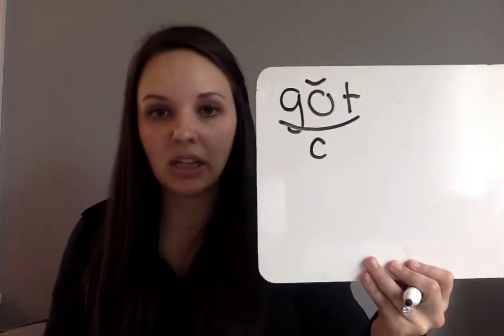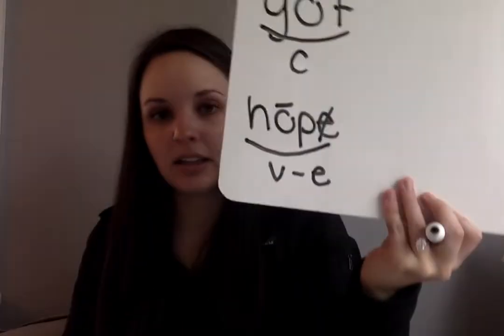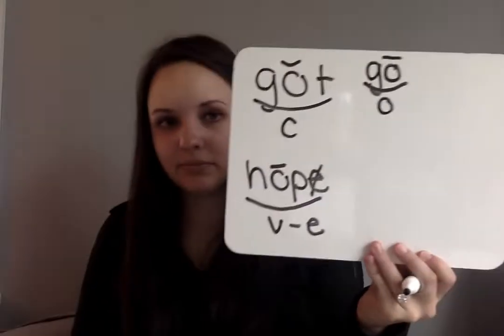So first we're going to review all of the syllable types. We have five so far that we know. We know the closed syllable, like GOT. We know the V-E, like HOPE. We know the open syllable, like GO. We know the R-controlled, like BARN. And we know the double vowel, like RING.